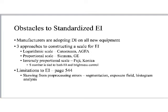I'll focus mostly on the inversely proportional scale, primarily used at most Baptist facilities — the Fuji system. In the Fuji system, the S number: if the S number is high, the exposure is too low; if the S number is low, the exposure was too high. We want to be somewhere in the middle range, normally around 200 to 400 for an S number. What I consistently see walking into facilities are S numbers that are too low.